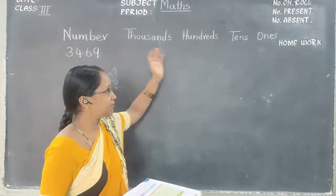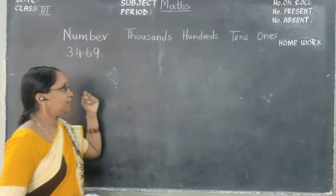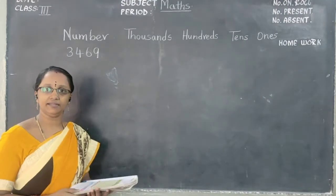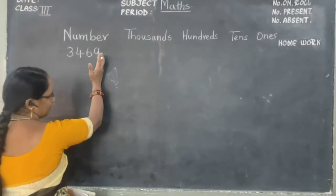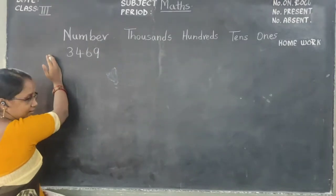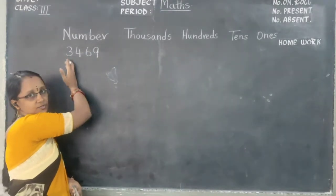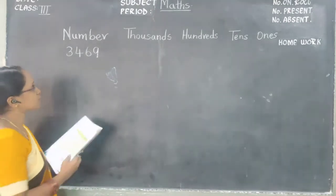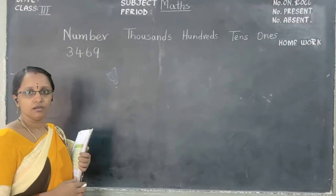See on the board — we have written ones, tens, hundreds, thousands. They have given us some digits and we have to write them in their particular place values. When we are writing, we should read from the right side to the left side. Ones, tens, hundreds, thousands — we count from this side. You should not start from the left side; that is wrong. Always start from the right: ones, tens, hundreds, thousands.